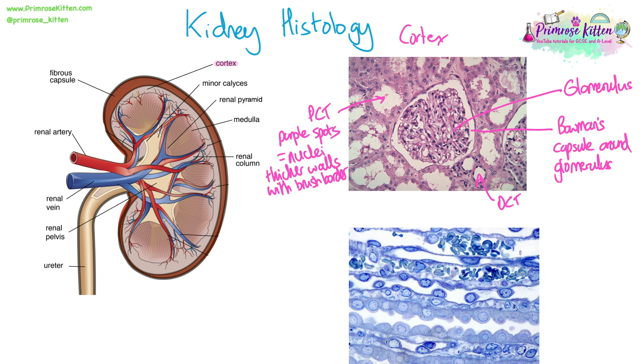The purple spots you can see are the nuclei stained in the cells lining the PCT. The medulla looks very different under the microscope.